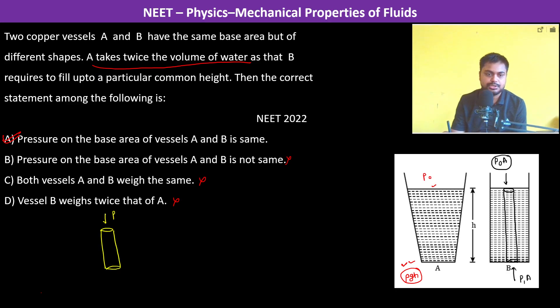This is P₀ into A. This is P₁ into A. And if this is H. Therefore, this becomes the weight down, it becomes H. H into A into ρ into g.